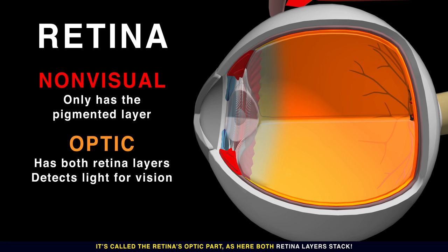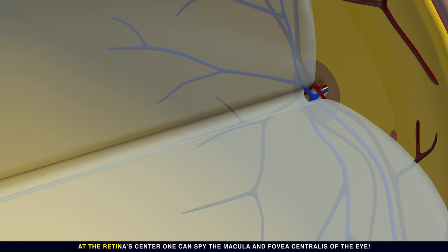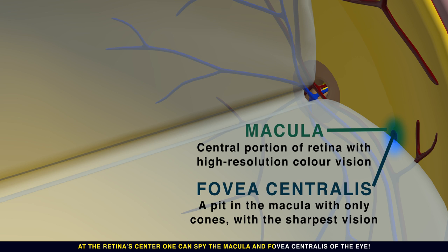As here, both retina layers stack. At the retina center, one can spy the macula and fovea centralis of the eye. The fovea has high photoreceptor density.